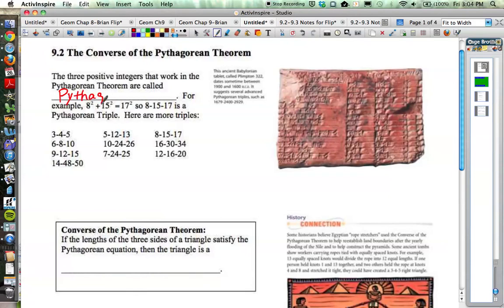The words that go in the blank would be Pythagorean triples. There are many Pythagorean triples. For example, 8, 15, and 17 are Pythagorean triples because 8 squared plus 15 squared equals 17 squared. So those three numbers work in the Pythagorean Theorem, and therefore they're called Pythagorean triples.